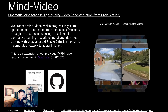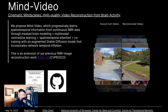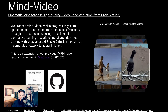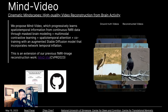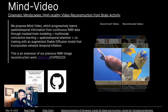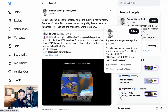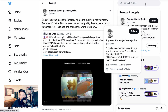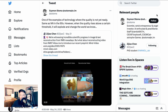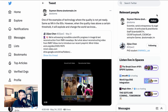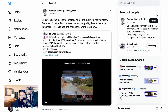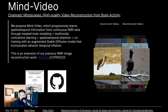On their website they provided a ton of background information and even a Google Drive full of resources to dig into the results. Wrapping up with potential implications — one commenter tweets: this is one of the examples of technology where the quality is not yet ready, same as neural networks in the 90s. However, when the quality rises above a certain threshold, it will explode and change the world we know. There are a few different ways that could happen.